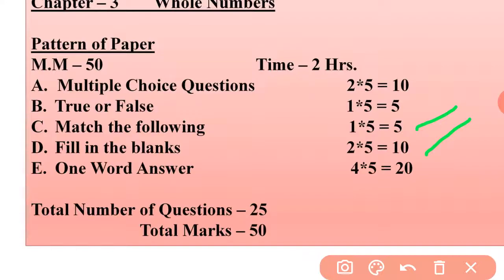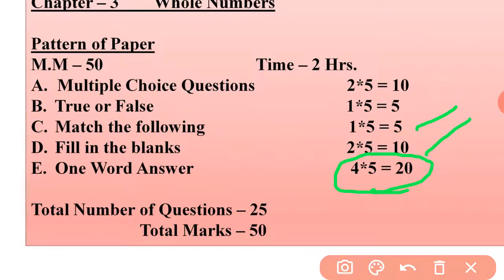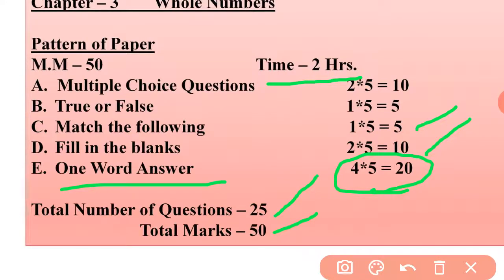In Part E, One Word Answer — there are five questions and each question carries four marks. In total, there are 25 questions, total marks are 50, and total time provided is 2 hours. This is how you will solve your unit test paper.